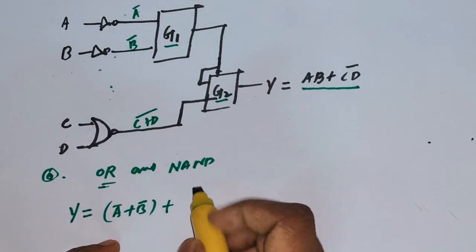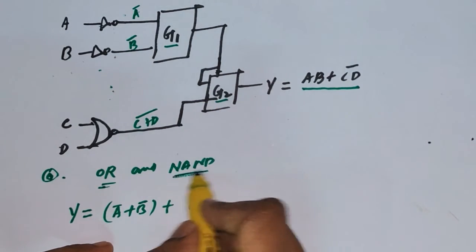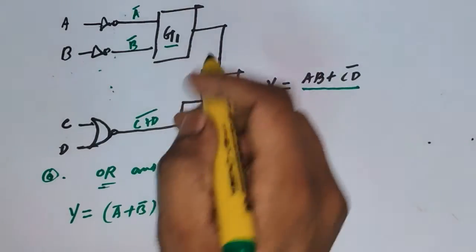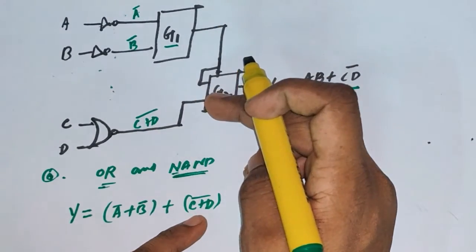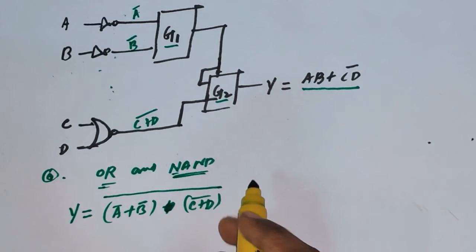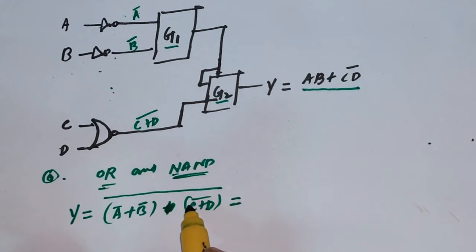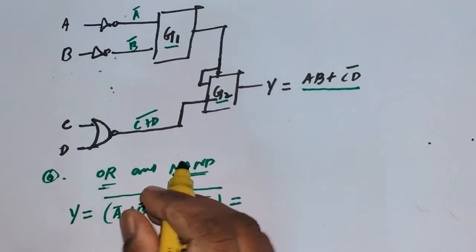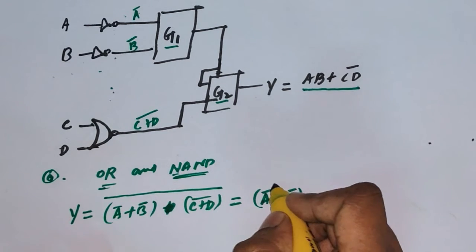So the two inputs going into G2 are: first input A-bar plus B-bar (from OR gate G1), and second input C plus D whole bar (from the NOR gate). Our guess for G2 is NAND. NAND is the complement of AND. AND means multiplying the two inputs — the dot product — and then taking the complement. Now for solving this, we are going to use De Morgan's theorem. The product of complements equals the sum of the individual complements.